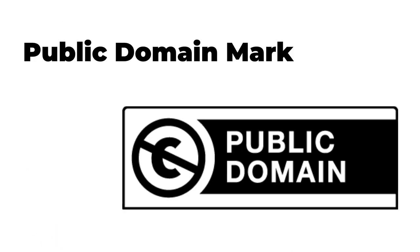For works known to be in the worldwide public domain, Creative Commons offers a tool called the Public Domain Mark. This is not a license and has no legal effect when applied to a work. Rather, it is a label used to mark works known to be free of all copyright restrictions. The Public Domain Mark is often used by museums and archives working with very old works to inform the public about the public domain status of a work.